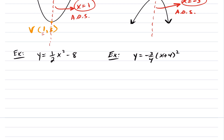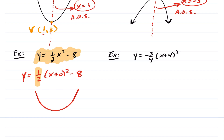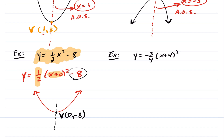The next quadratic is in vertex form — we just adjust it slightly. We can write it as x plus zero squared minus 8, which still fits the vertex form. The a value is positive, so it opens upwards. To find the vertex, ask: what value of x makes the inside zero? That's x equals zero. The y-coordinate is negative 8. So the vertex is (0, negative 8). The axis of symmetry is a vertical line, so x equals 0.